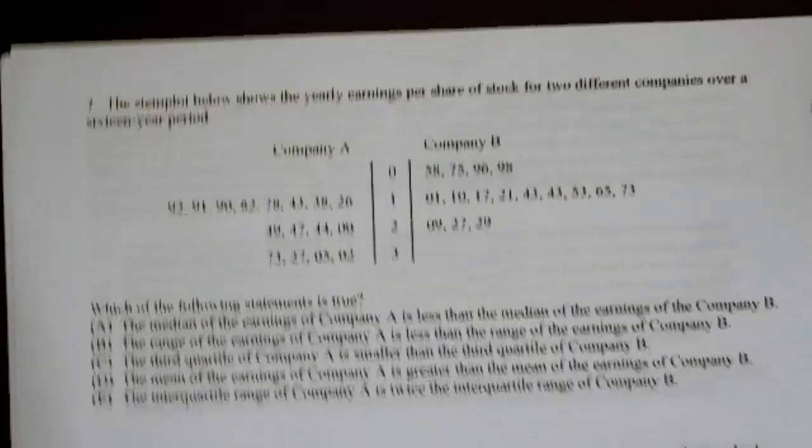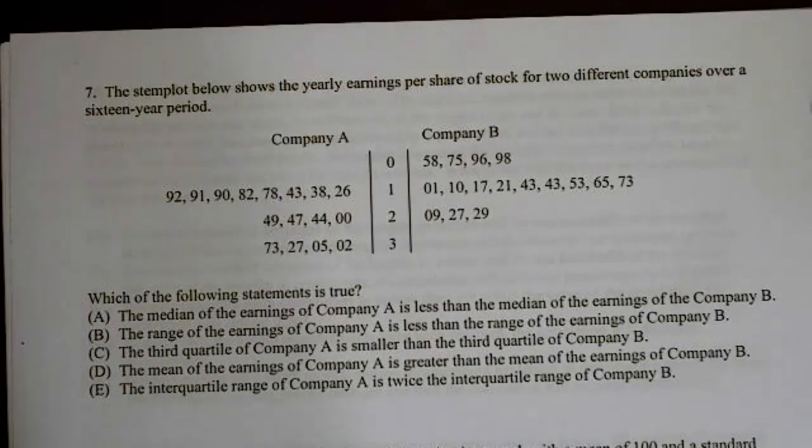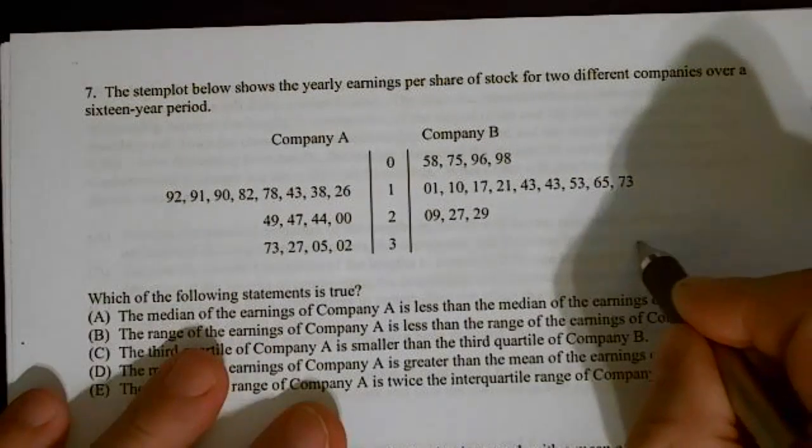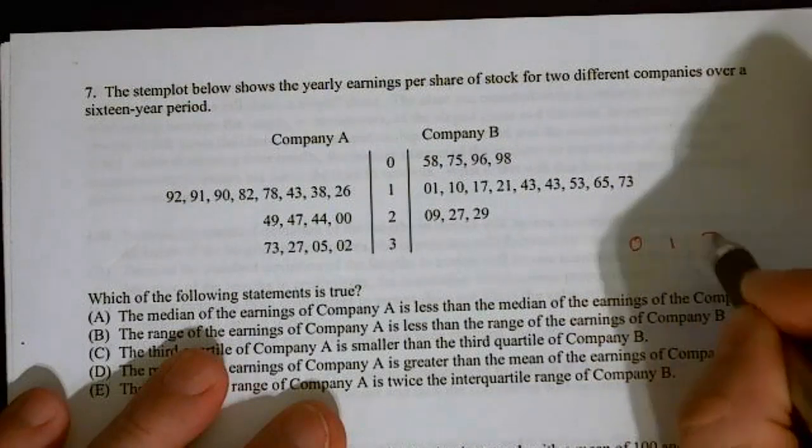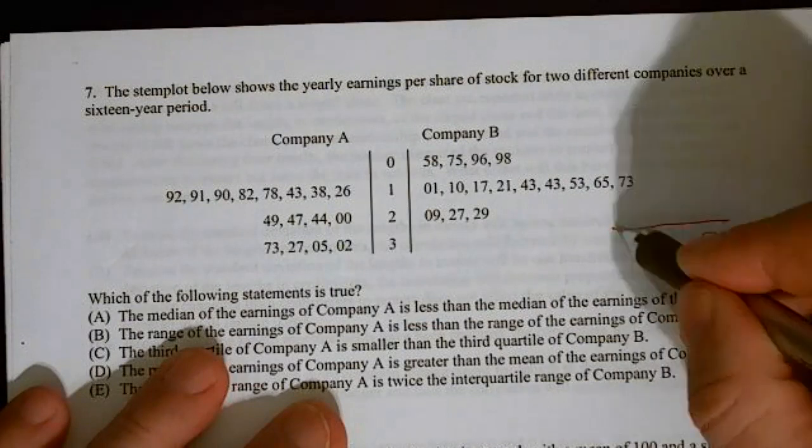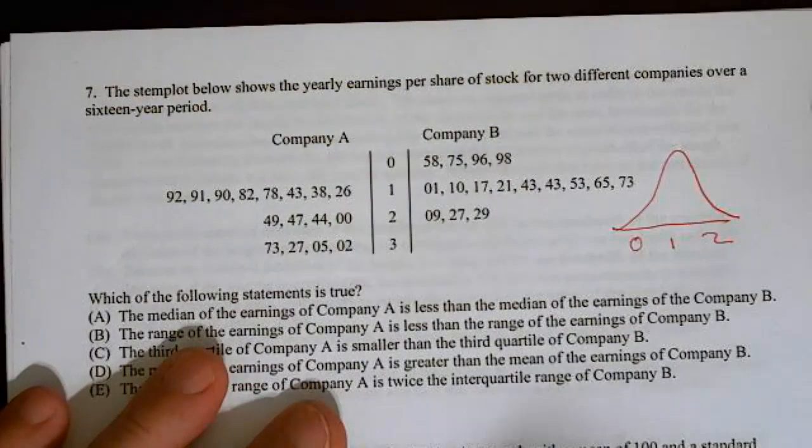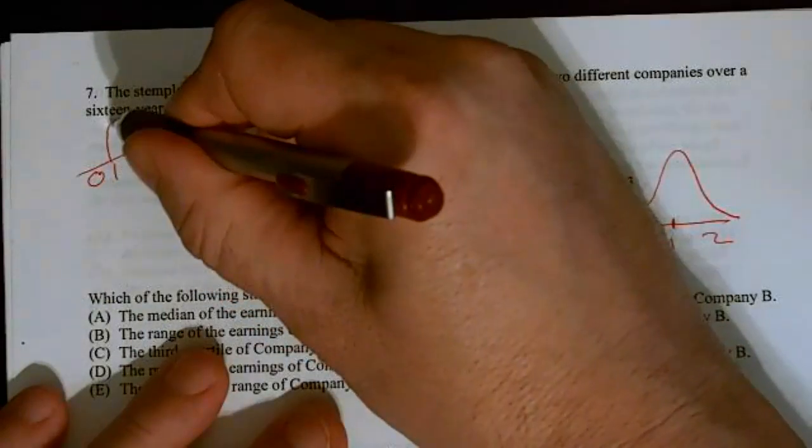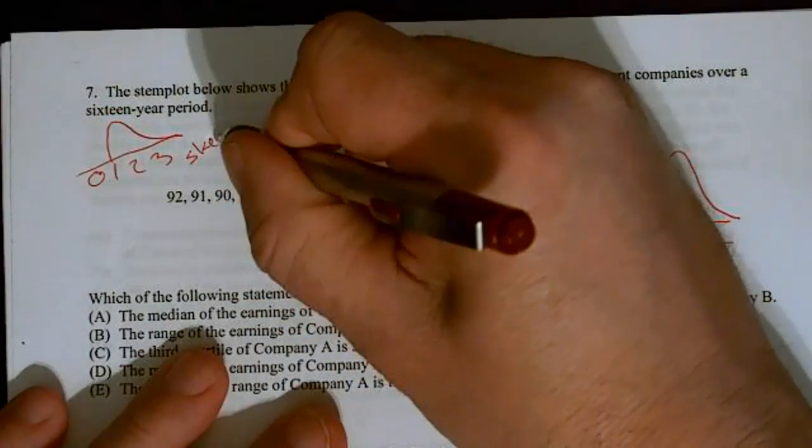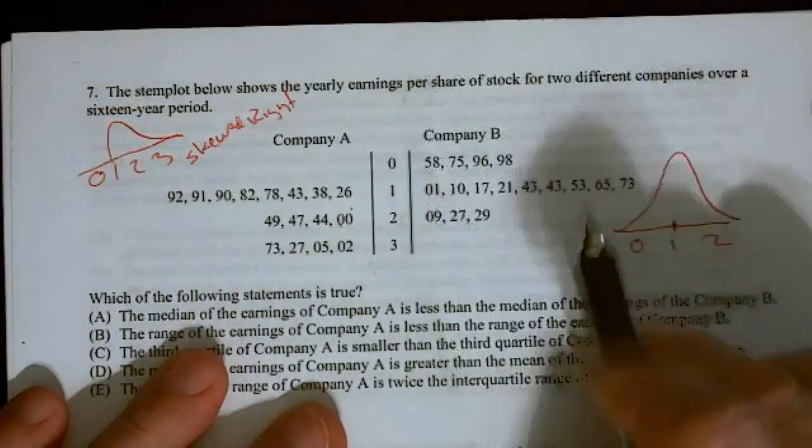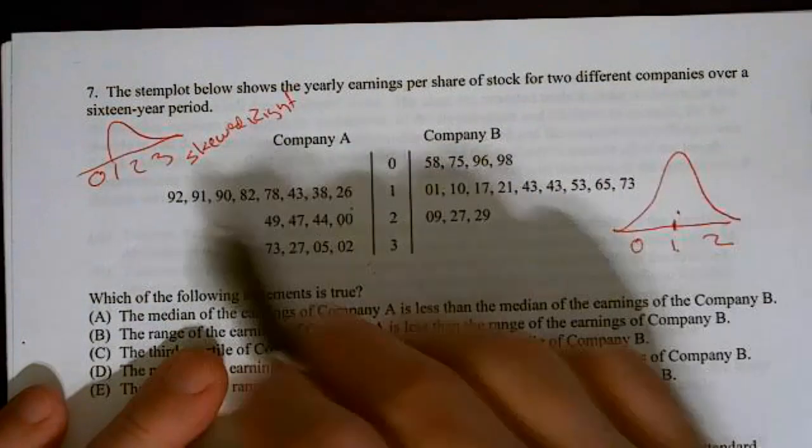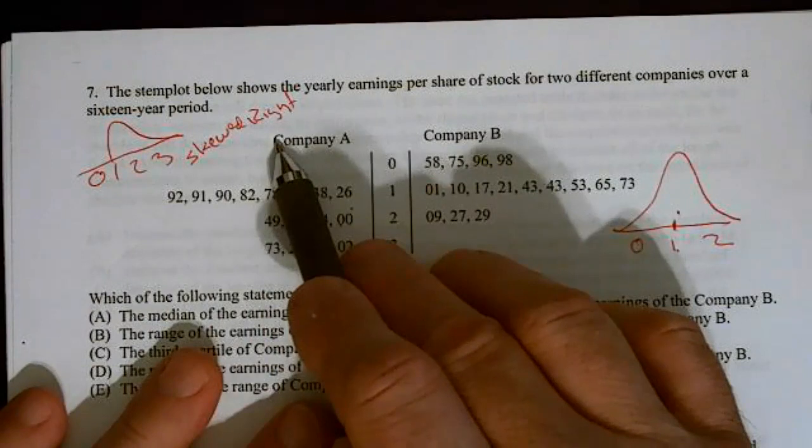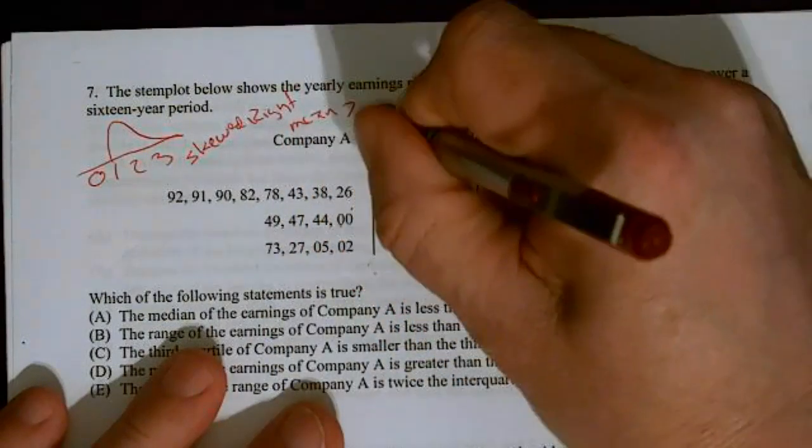Number seven. The stem plot below shows the yearly earnings per share of stock for two different companies over a 16 year period. Which of the following statements is true? Well let's look at this one first. So we have 0, 1, and 2. And I'm just going to look at that and go, you know what, I got a bunch here, a bunch in the middle. So this one is reasonably mountain shaped and centered at about 1. When I look at this one, we have 0, 1, 2, 3. I have a lot at the beginning and then a few at the top. So this one appears to be skewed right. And that's going to be important. So here, the mean and median should be about the same and about here. Over here, we're skewed to the right, which means our mean, our average will be above our median. So our mean will be greater than the median.